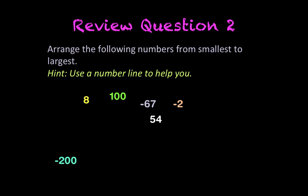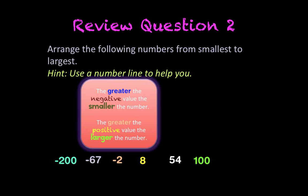So negative 200, you'll start with, that'll be the smallest number, followed by negative 67, then negative 2, positive 8, positive 54, and finally your largest number is positive 100.